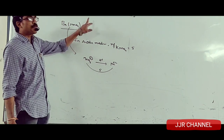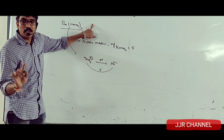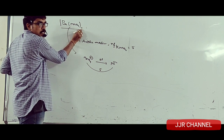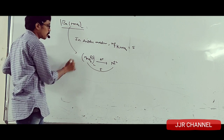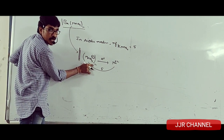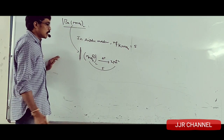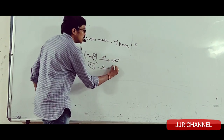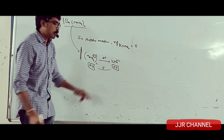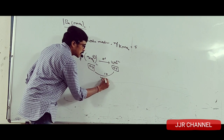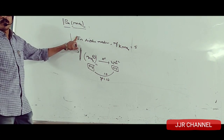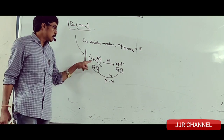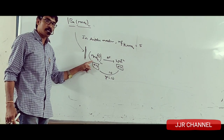As per the definition of n-factor — change in oxidation state per one mole of the compound — one mole of Ba(MnO4)2 contains two MnO4 minus ions. Therefore, we have two MnO4 minus ions converting to two Mn²⁺ ions. The overall oxidation state of manganese goes from plus 14 to plus 4, giving a change of 10. Hence, the n-factor for barium permanganate in acidic medium is 10, not 5.